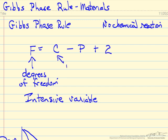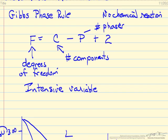So C is the number of components, the number of chemical compounds in the system. P is the number of phases, and then the degrees of freedom means the number of variables that we can have control over that are independent.